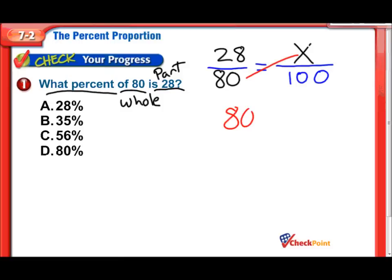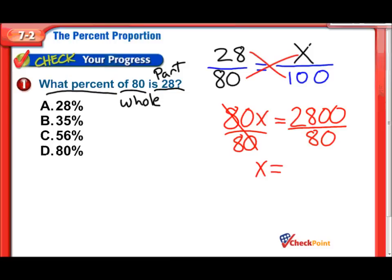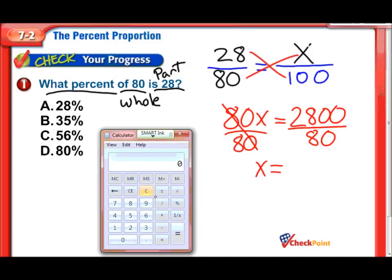Now all we have to do is our cross products and solve. 80 times x is 80x. 28 times 100 is 2800. Now we just isolate that variable by dividing by our coefficient. That cancels out. Got an 80 over here. So we have x equaling. Let's let the calculator solve that for us. So that's 2800 divided by 80. There we go. 35. So it's 35% because that 35 was over 100. So 35% of 80 is 28.